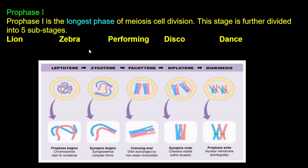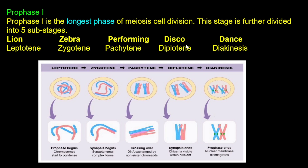Prophase first is the first stage of meiosis first. In the exam, you can remember the five sub-stages as: Leptotene, Zygotene, Pachytene, Diplotene, and Diakinesis — using the mnemonic lion zebra performing disco dance.